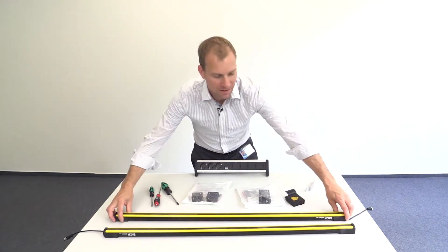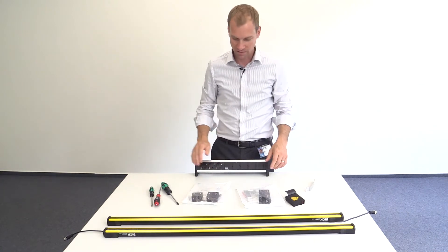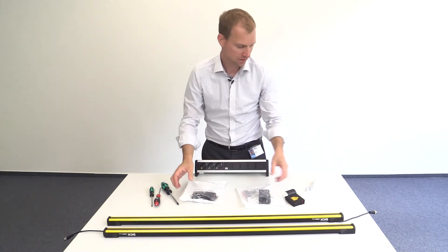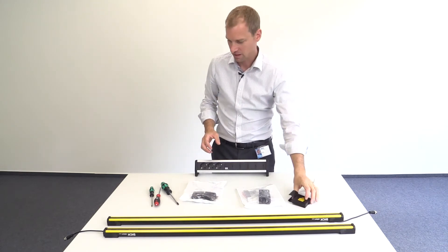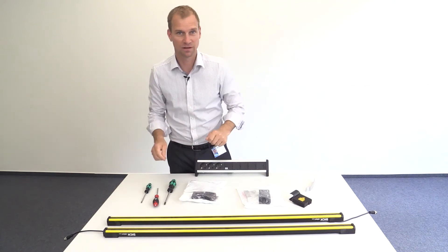We need a DTEM sender and receiver pair, we need the brackets for mounting the DTEM in the column, we need an alignment aid with a laser, and we need three allen keys for adjusting the screws.